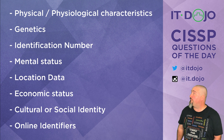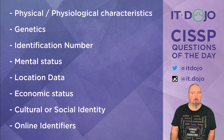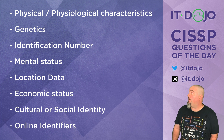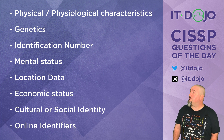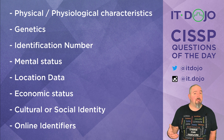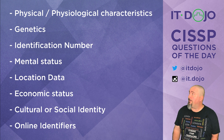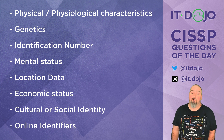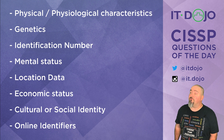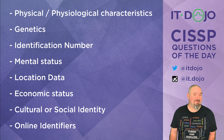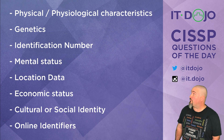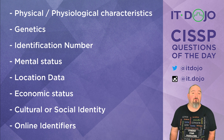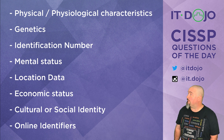First choice: your physical or physiological characteristics. No, that is part of GDPR but it was also part of the EU Privacy Directive, so that is nothing new. Second option is something genetic, something in your DNA. Also no — that has always existed in the EU Privacy Directive and is also included in personal data for GDPR. Number three, identification number, has also been around since before GDPR came to be, so that's not one of the choices we're looking for.